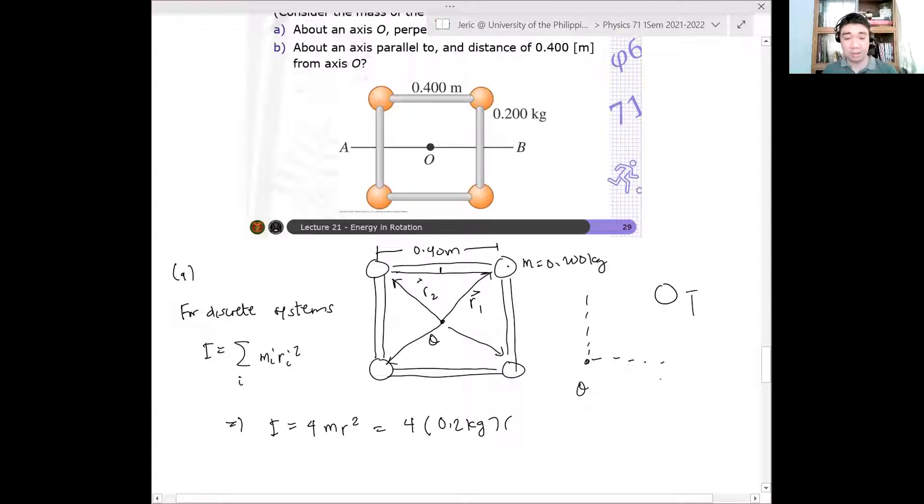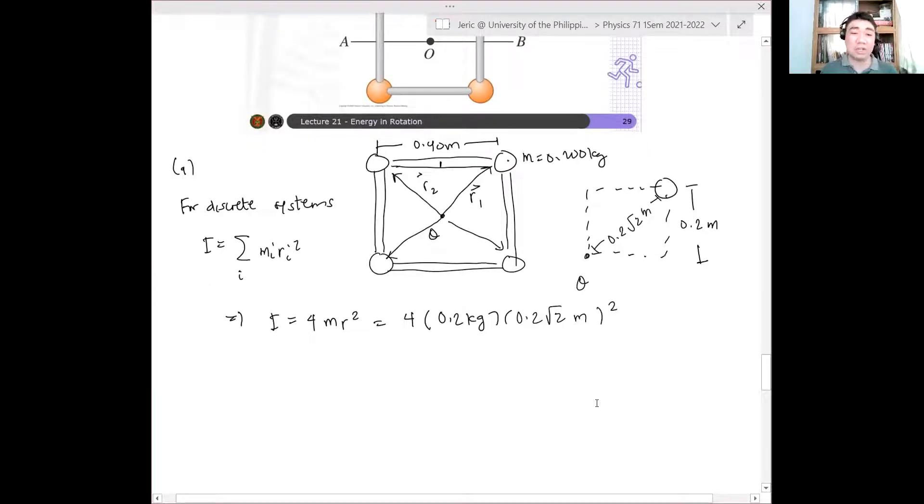Kalahati na ito, di ba? So this is 0.2 meters. Therefore, what is this diagonal here? 0.2 square root of 2. Yes, it should be 0.2 square root of 2 meters. Remember, that's a square. So this should be 0.2 square root of 2 meters quantity squared. Hindi ko na inexpand yung square root of 2 kasi kaka-calculator word ko naman yan.